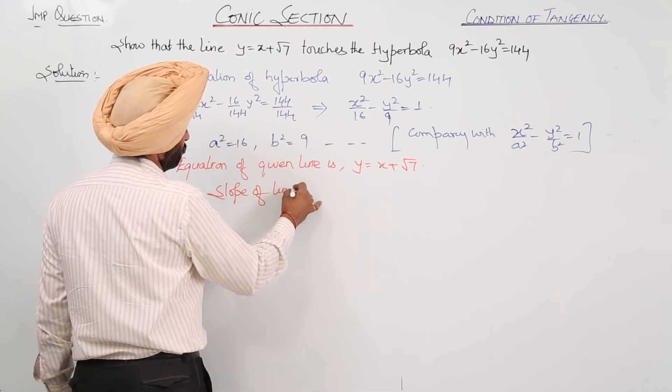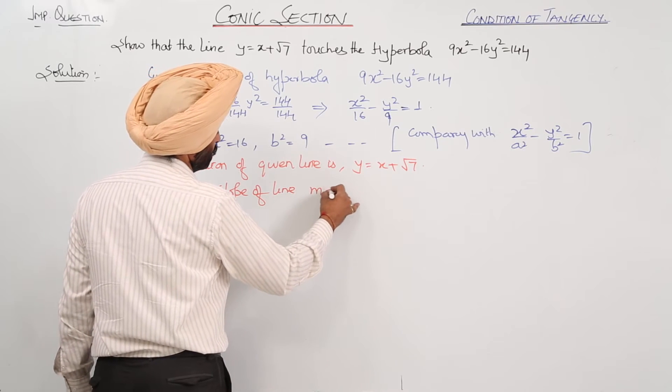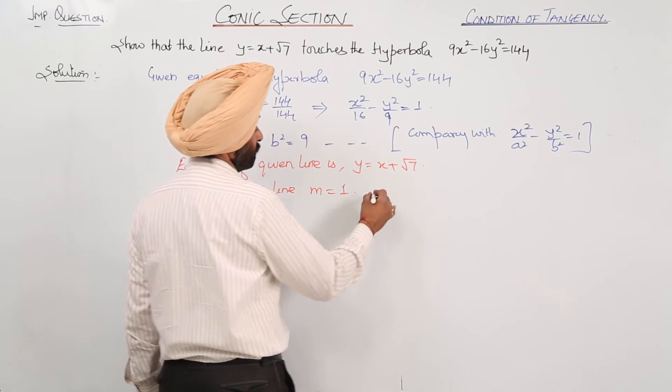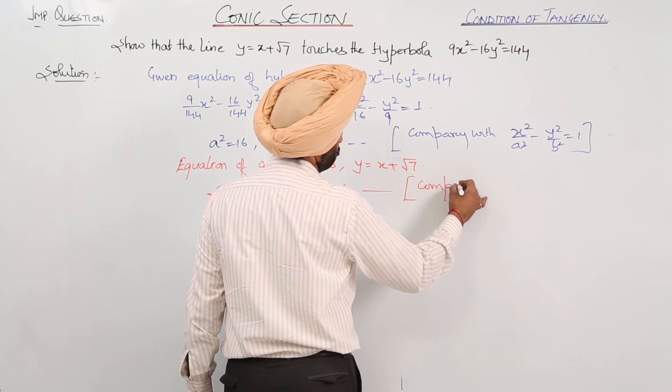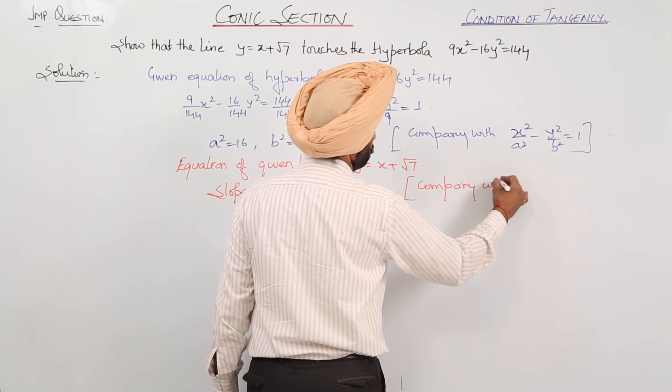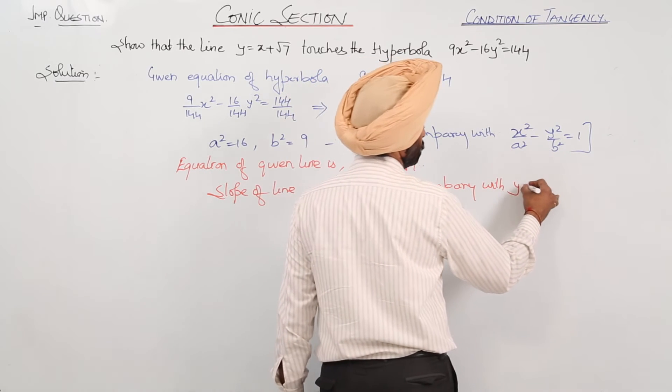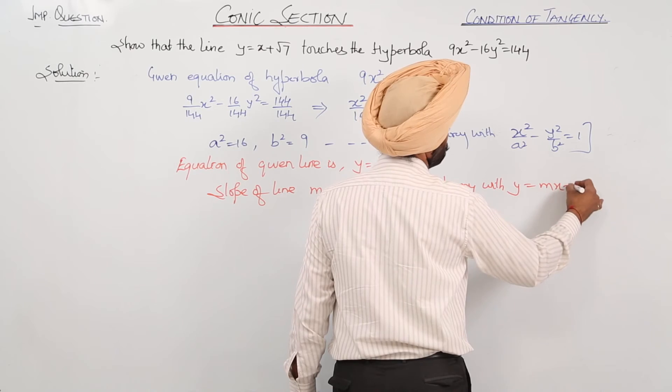Slope of line m equals 1, comparing with y equals mx plus c.